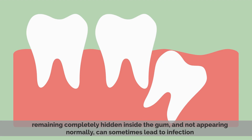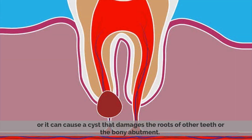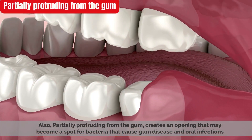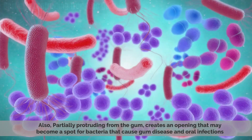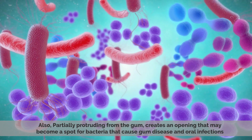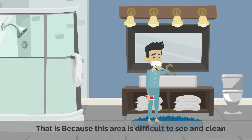It can cause a cyst that damages the roots of other teeth or the bony abutment. Also, partially protruding from the gum creates an opening that may become a spot for bacteria that cause gum disease and oral infections, because this area is difficult to see and clean.